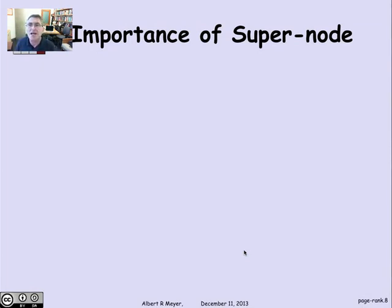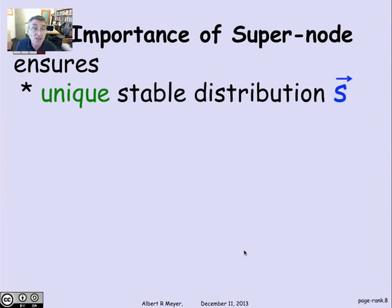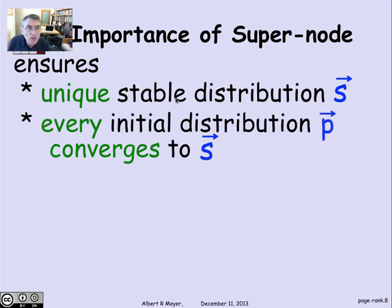The super node is playing a technical role in making sure that the stationary distribution exists. So it guarantees that there's a unique stationary distribution S bar. By the way, I sometimes use the word stable and sometimes stationary. They're kind of synonyms. Although I think officially we should stick to the word stationary distribution. When, as I've mentioned before, when a digraph is strongly connected, that is a sufficient condition for there to be a unique stable distribution. That's actually proved in one of the exercises in the text at the end of the chapter.